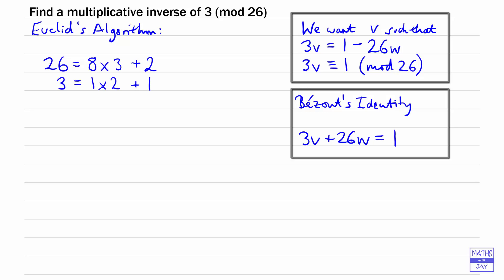Now we're going to use backward substitution because remember, we're trying to write 1 in terms of 3 and 26. If we write the 1, that's the remainder here, in terms of the 3 and the 1 times 2, to make it really obvious what I'm doing, I'll write down 1 times 2.